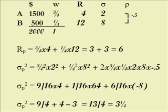Here we have A and B: $1,500 and $500 out of $2,000. The weights would be three-quarters, one-quarter, adding to one. There's the return, there's the standard deviations, and the correlation coefficient is minus one-half. We compute the weighted average and find three-quarters of 4 and a quarter of 12 makes a 6% return.